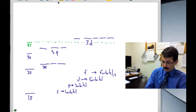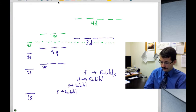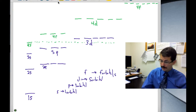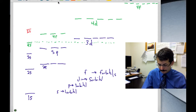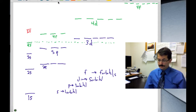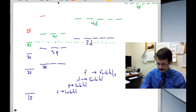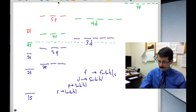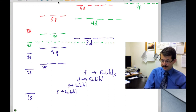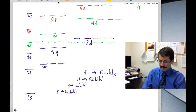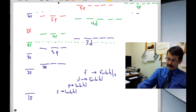So 4s is slightly lower in energy than 3d, but then 4p comes along and is actually higher in energy than 3d. Then we have 4d, then 4f. The same pattern continues: 5s is lower in energy than 4d, followed by 5p and 5d. And 6s ends up below both 5d and 4f — and it keeps going up from there.